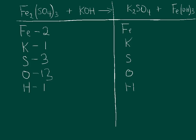Over on the product side, I just have one iron and two potassiums. My sulfur is just one sulfur there. Oxygens are split between two places — some in the sulfate and some in the hydroxide. This subscript three again multiplies everything inside the parentheses by three, so I have four oxygens plus three oxygens, giving me seven oxygens. Likewise, I have one hydrogen in those parentheses times three, so three hydrogens on the product side.